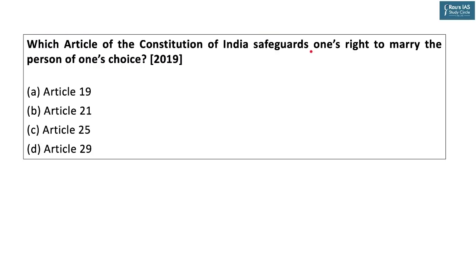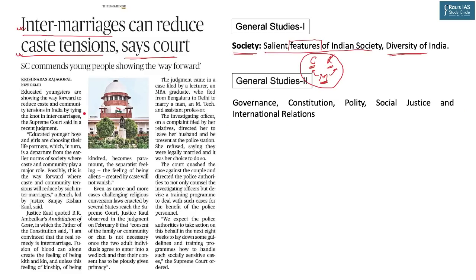UPSC in 2019 asked a prelims question: which article of the Constitution safeguards one's right to marry the person of one's choice? As per Supreme Court judgments, this right is covered under Article 21 — the right to life and personal liberty — making the right to marry a person of one's choice a fundamental right. Since this issue keeps appearing in the news, it is important for the coming mains examination.